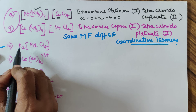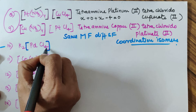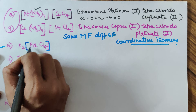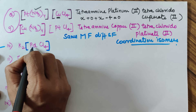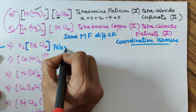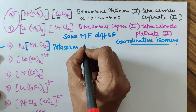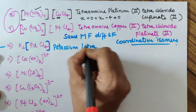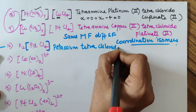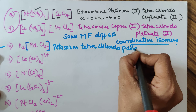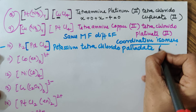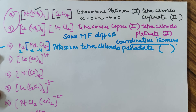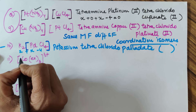Example ten: potassium is the cation. Inside the square bracket, Cl is the ligand — chlorido — and Pd is the central atom. Since this is the anionic part, the name changes to palladate. The name is potassium tetrachlorido palladate. For the oxidation number: x minus 4 equals minus 2, so x comes out to be plus 2.